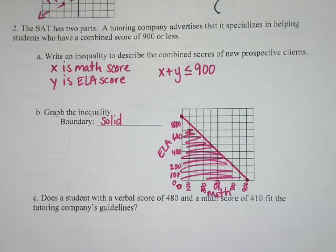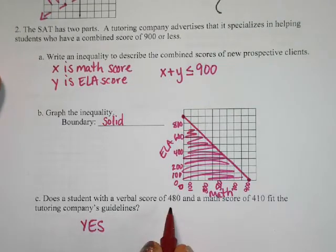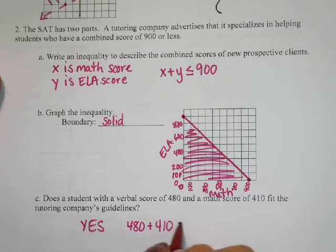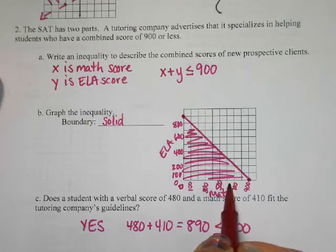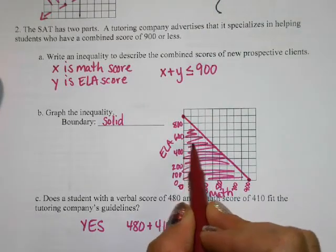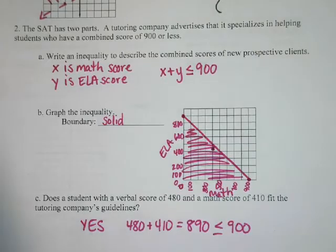Does a student with a verbal score of 480 and a math score of 410 fit the tutoring company's guidelines? Yeah. How could we tell? If you add them together you get 890. You could also look at the graph — here's 480 on the English axis, that's about right there, and a math score of 410 would be like right there. So it's in my shaded area on my graph.